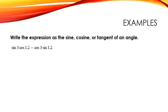This time we have essentially the right-hand side of an equation. We need to figure out which formula matches with sin A cos B minus cos A sin B. Pause the recording, look at your formulas, see which one this matches, write the answer, and resume to check your answer. This matches with the sine of (A minus B). So the sine of (3 minus 1.2) is the sine of 1.8 — and that's all they wanted you to do with that.